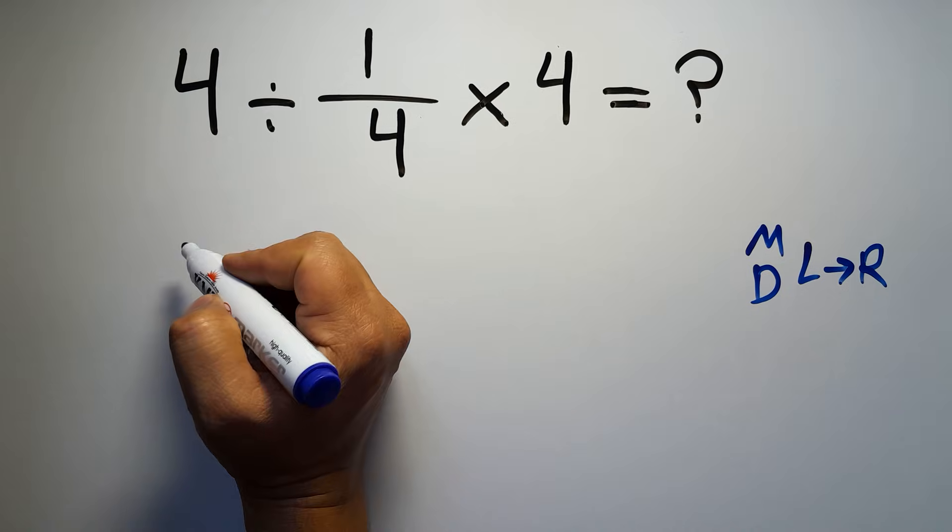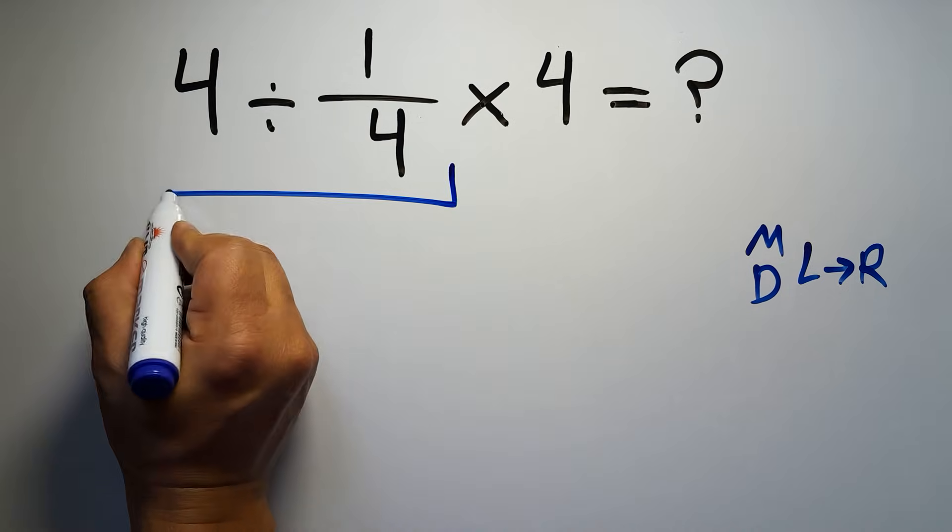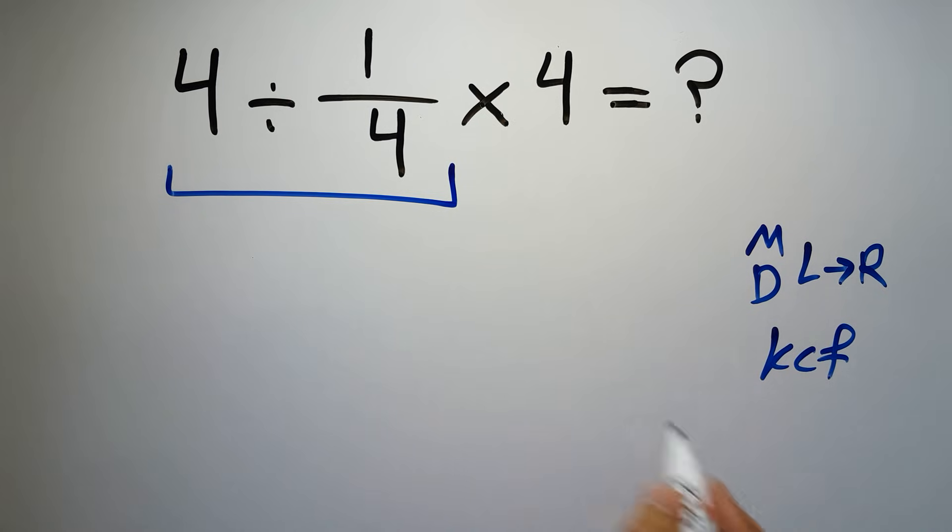First we have to do this division, 4 divided by 1 over 4. According to the KCF rule, K stands for keep, C stands for change, and F stands for flip.